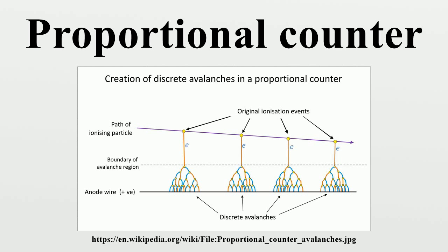The chamber geometry and the applied voltage are such that in most of the chamber the electric field strength is low and the chamber acts as an ion chamber. However, the field is strong enough to prevent recombination of the ion pairs and causes positive ions to drift towards the cathode and electrons towards the anode. This is the ion drift region. In the immediate vicinity of the anode wire, the field strength becomes large enough to produce Townsend avalanches. This avalanche region occurs only fractions of a millimeter from the anode wire, which itself is of a very small diameter.